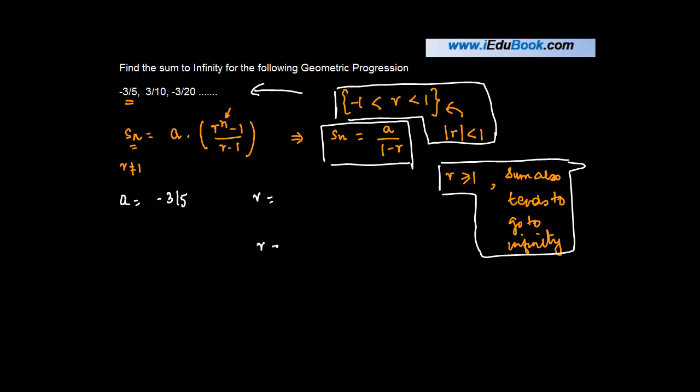We will try two values of r. First by dividing the second term with the first. So 3 by 10 divided by 3 by 5. So this 3 will knock this 3 off. This 5 will go to 2 or minus 1 upon 2.